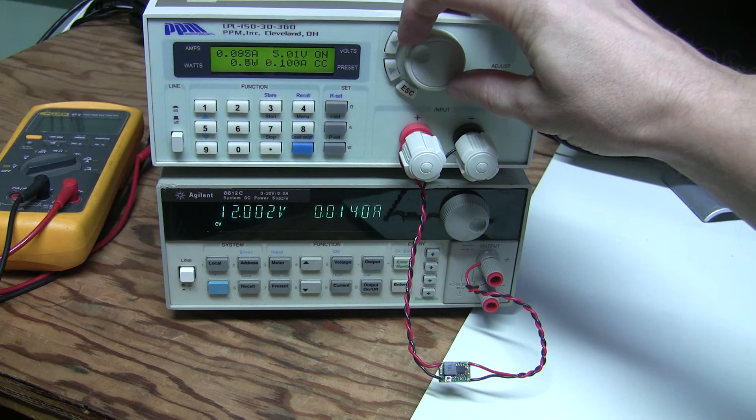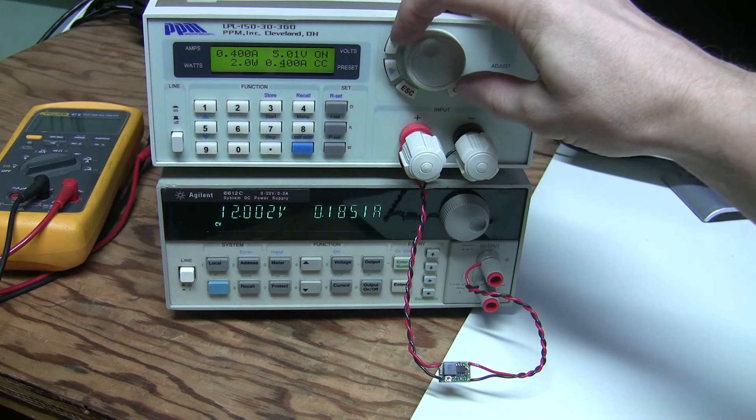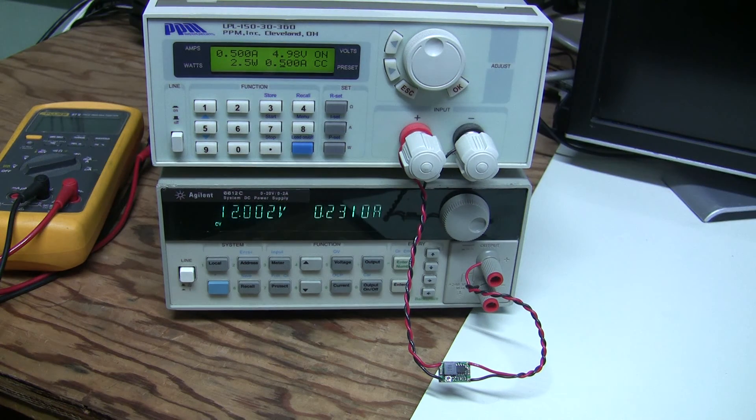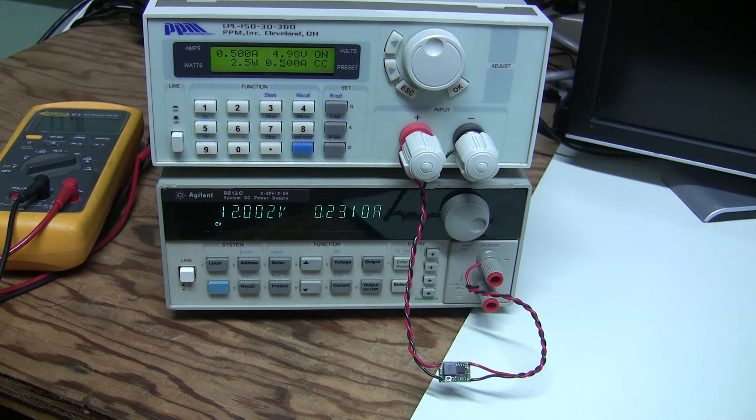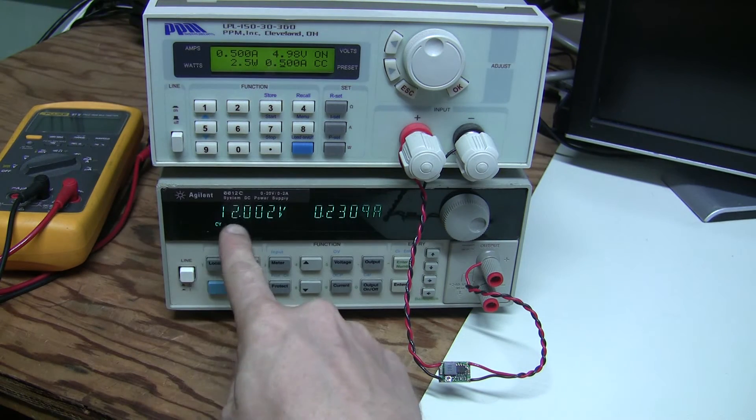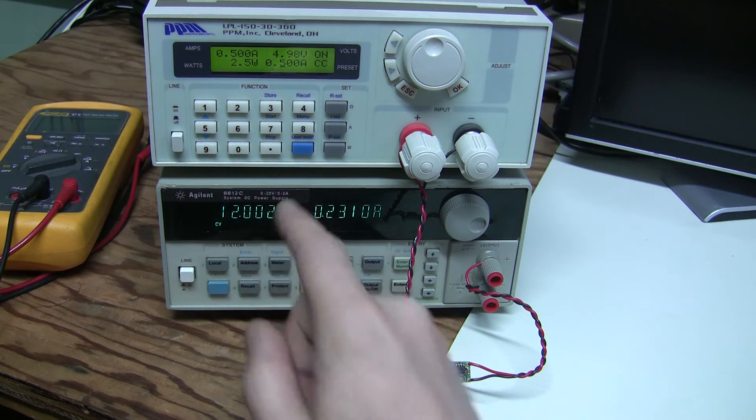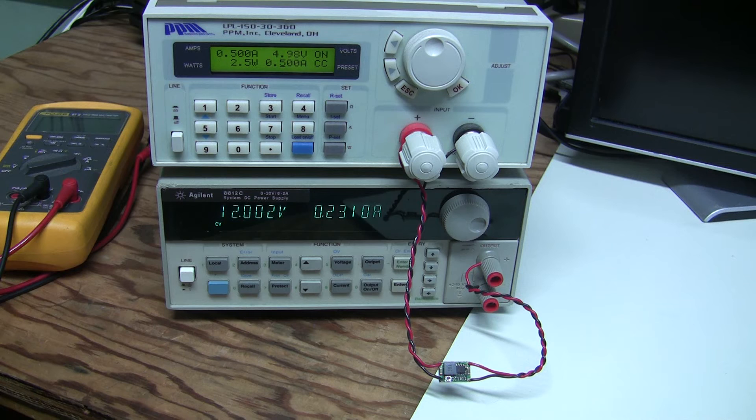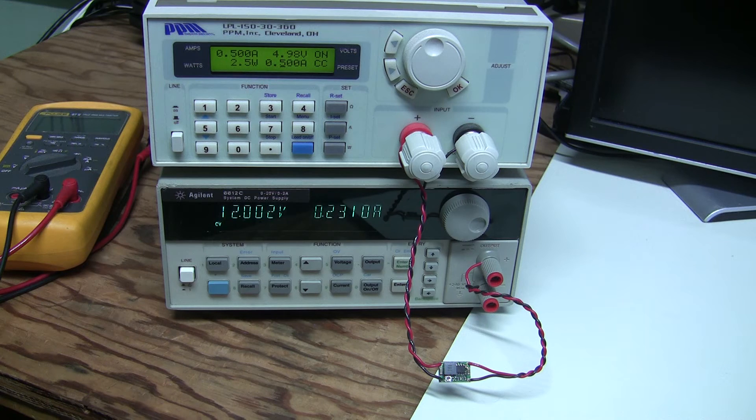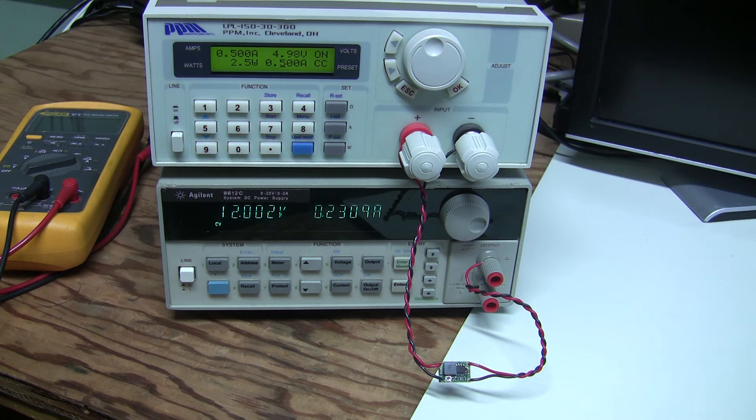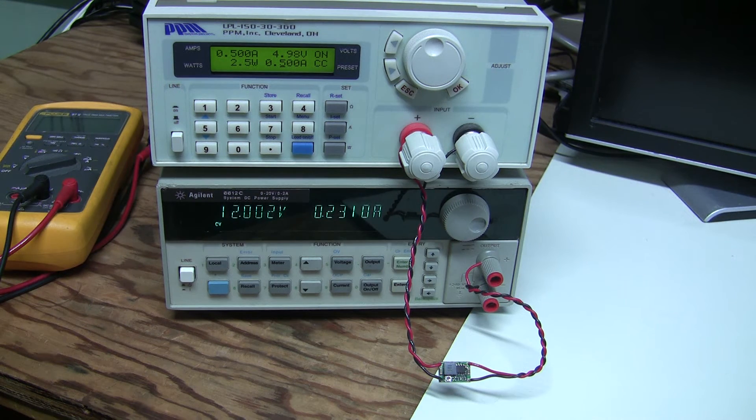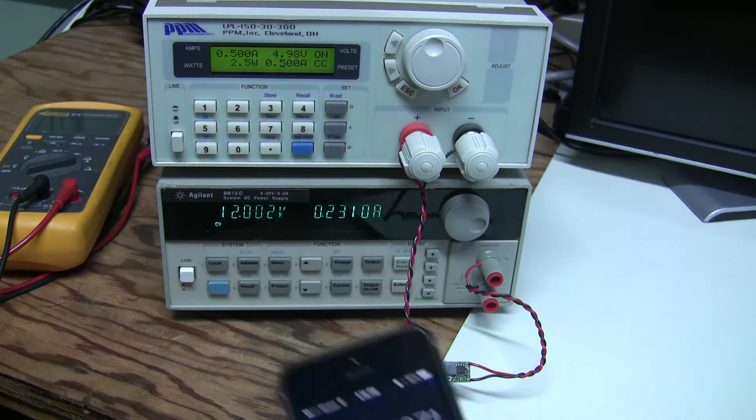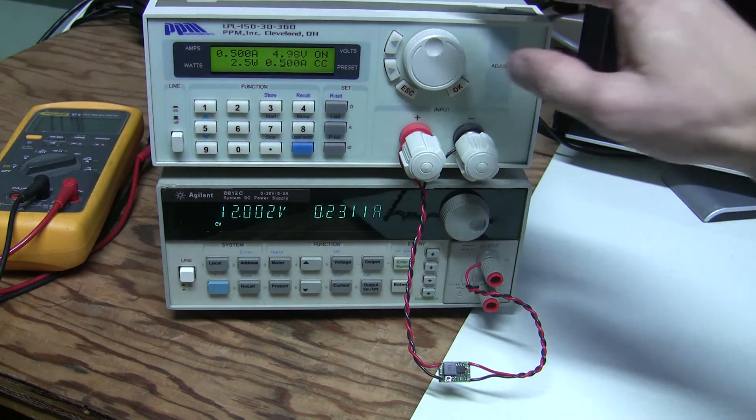All right, 200, 300, 400, 500 milliamps. Let's have a look at the efficiency at this point. So the output is 2.5 watts, and to supply that the consumption is 12 volts times 0.23 amps, which is 2.76 watts. This gives us 90 percent efficiency at this level, so let's go higher.